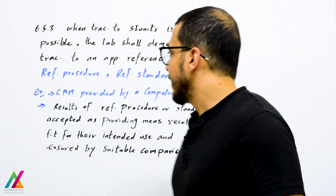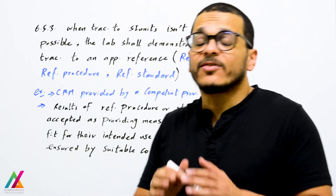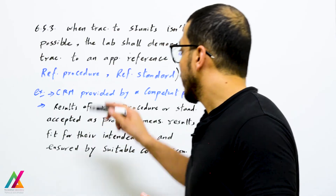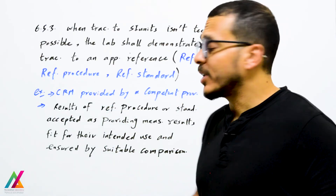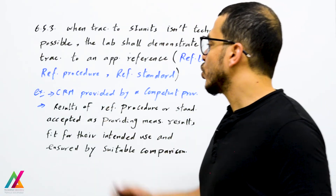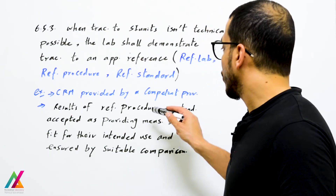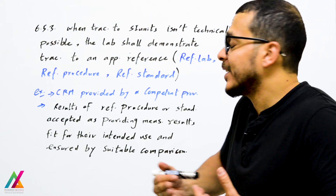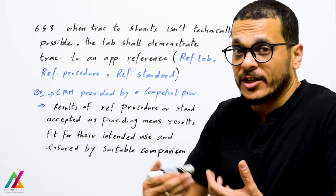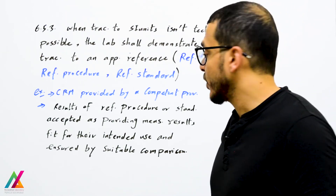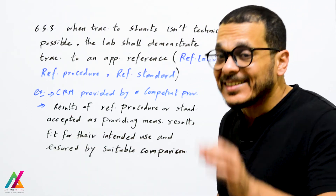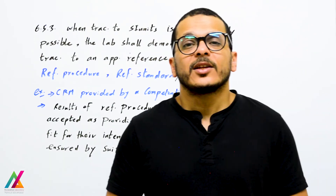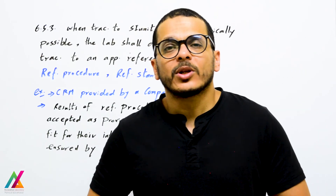Another example: certified values of CRM shall be provided by a competent provider. Also, results of a reference procedure or reference standards accepted as providing measurement results for the lab, fit for their intended use, and ensured by suitable comparison.